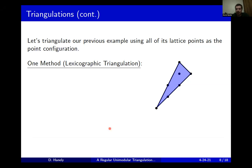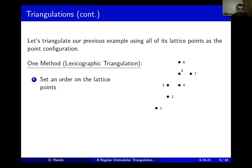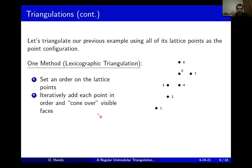Let's go ahead and triangulate the example we started with. Because this was a triangle, if we were only triangulating using the vertices we'd already be done. But let's take all of the lattice points contained in it. The method we'll use is commonly referred to as the lexicographic or pulling triangulation method. We start with just this point configuration — the set of all lattice points of that polytope — and we put an order on the lattice points, here numbered one through seven. We'll successively add points and do a coning-over operation for the visible faces of what's been built up so far.